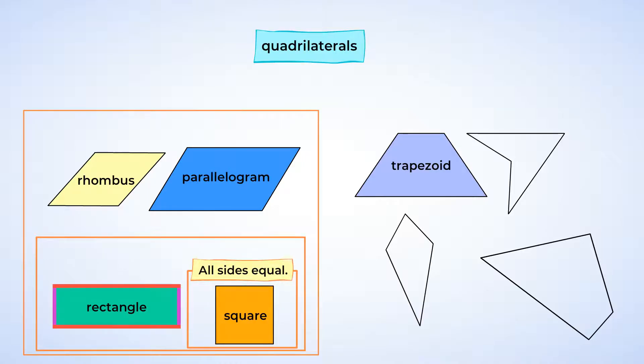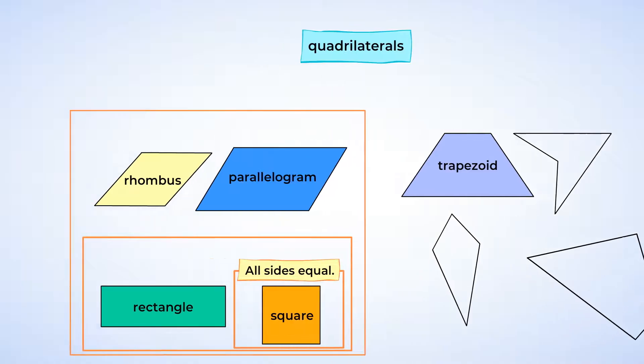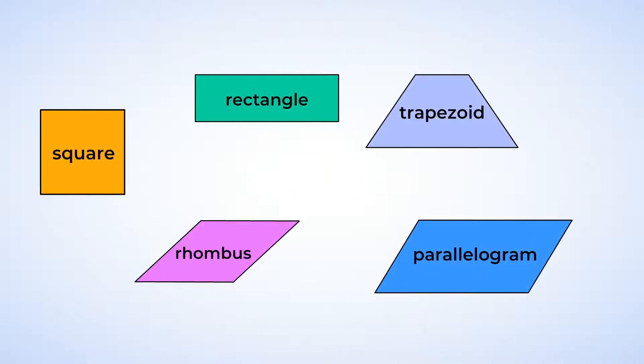Wow, there's a lot that goes into organizing shapes. So we're going to focus on just a few different quadrilaterals: squares, rectangles, rhombus, parallelogram, and trapezoids.